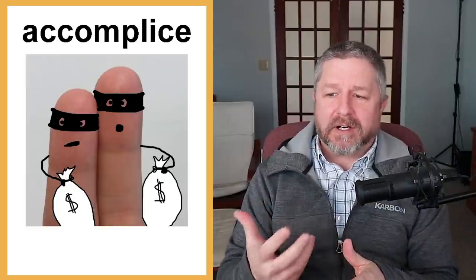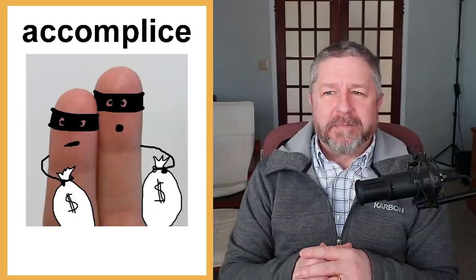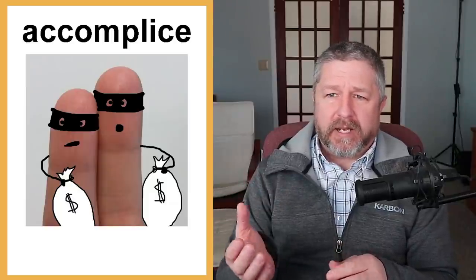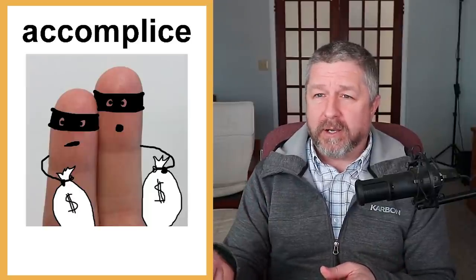An accomplice is someone who commits a crime with you. If someone is planning to commit a crime and instead of doing it themselves, they have someone help them, that would be their accomplice — someone who commits a crime with another person. When you're arrested, you are put in handcuffs — what the police put on your wrists so that you can't fight the police and can't run away easily. The type of police officer who investigates serious crimes is called a detective. A detective looks at the evidence, looks at the crime scene, talks to witnesses, and tries to figure out who committed the crime.